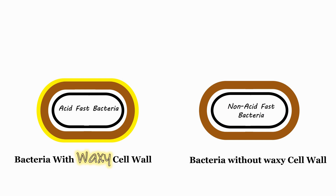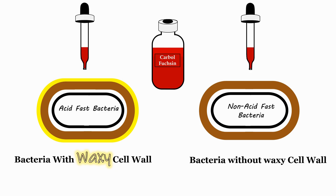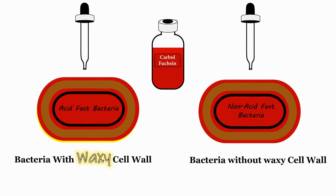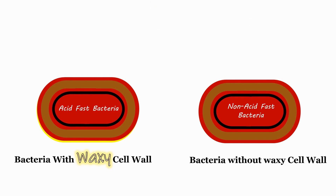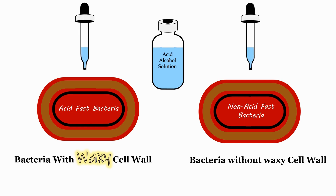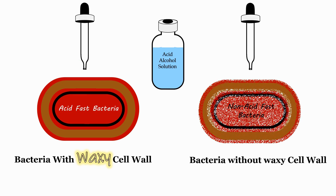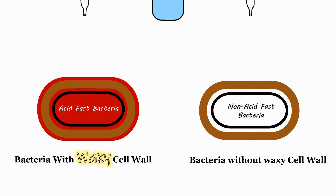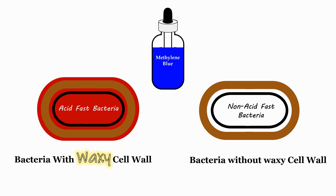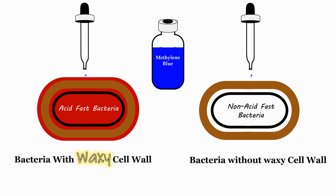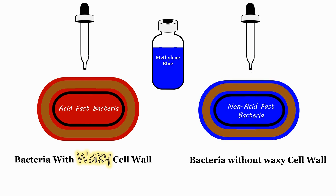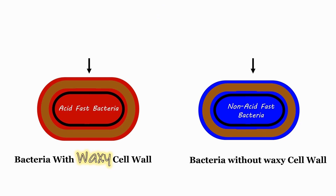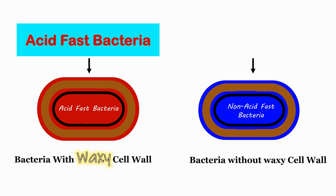Now we know that acid-fast bacteria have a waxy cell wall whereas non-acid-fast bacteria do not. Let's compare their staining. The primary stain stains both types of bacteria red. After addition of the decolorizer acid-alcohol solution, only non-acid-fast bacteria lose the red color and become colorless — acid-alcohol has no effect on acid-fast bacteria. The counter stain methylene blue then stains only non-acid-fast bacteria, and they appear blue in color.